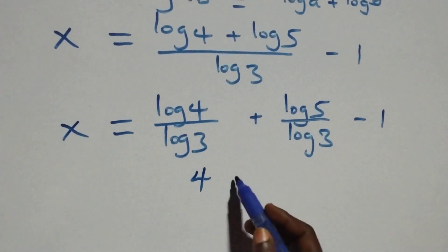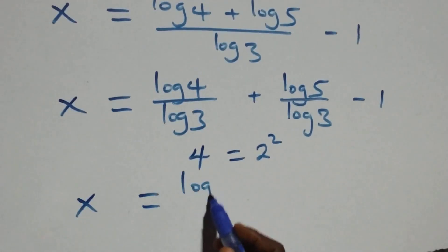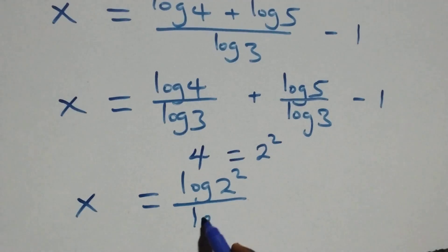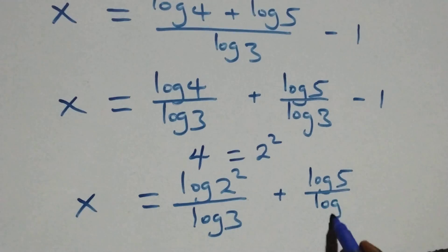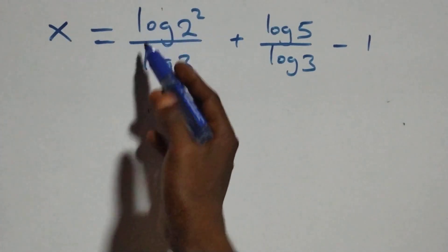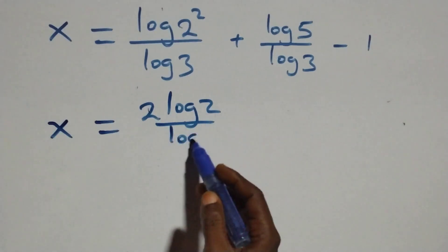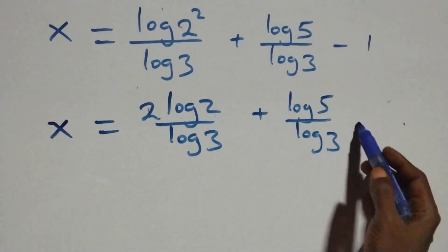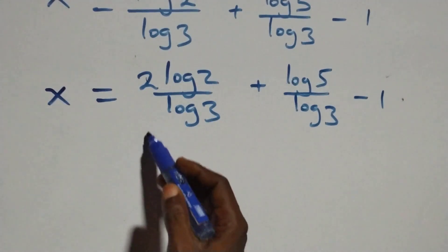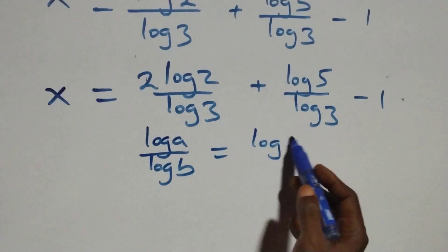We separate this into two fractions: x equals log 4 over log 3 plus log 5 over log 3, minus 1. We can also express 4 as 2 squared, so x equals log 2 squared over log 3, plus log 5 over log 3, minus 1. Applying the power rule gives 2 log 2 over log 3. Then applying the change of base rule — log a over log b is the same as log a to base b — we get x equals 2 log 2 base 3 plus log 5 base 3 minus 1.